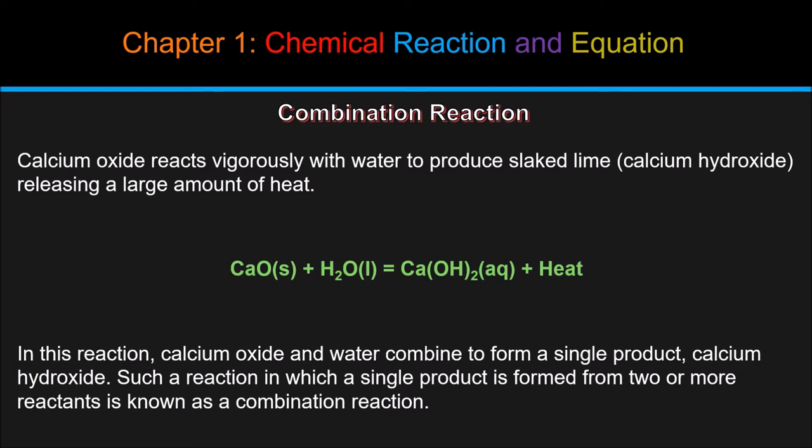The chemical equation formed by this reaction is CaO(S) plus H2O(L) equals Ca(OH)2(AQ) plus heat. In this reaction, calcium oxide and water combine to form a single product, calcium hydroxide. Such a reaction in which a single product is formed from two or more reactants is known as a combination reaction.